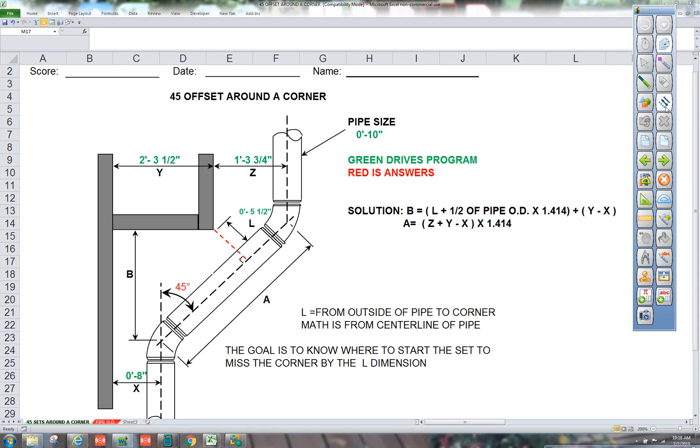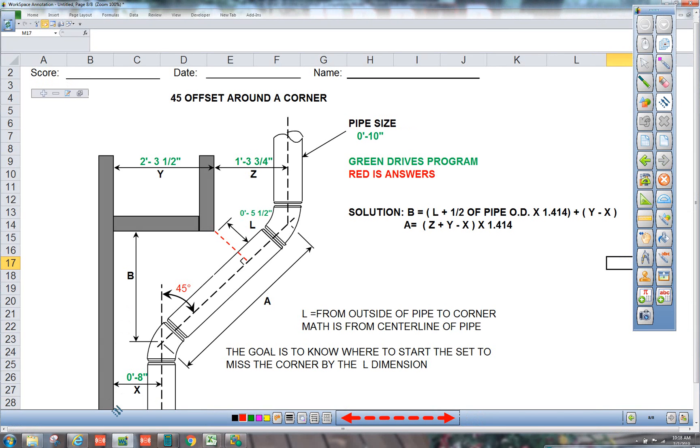we have what we call 45 offsets around the corner. And what we have here, we have the building structure, this wall, and many times we have to keep our pipe close to that to keep it out of the ceiling. And we have to maintain a desired dimension from that corner, and that would be L. That would be a perpendicular measurement, and we want to maintain L.